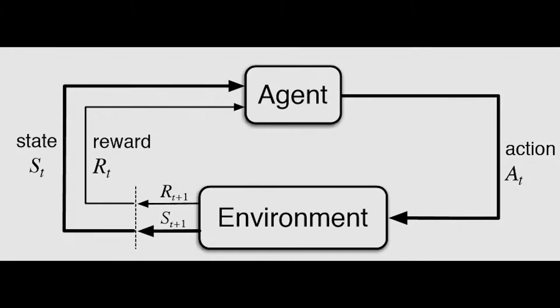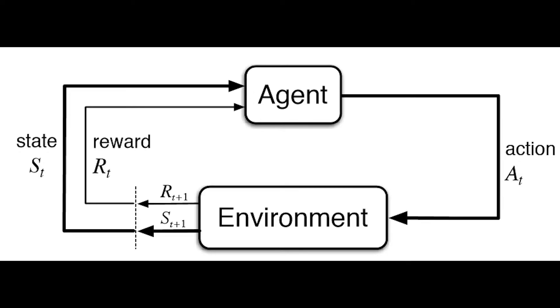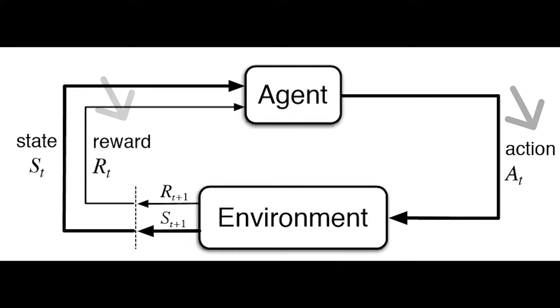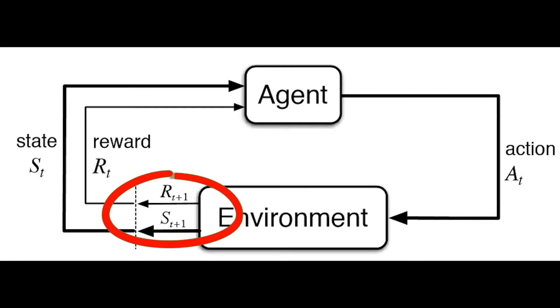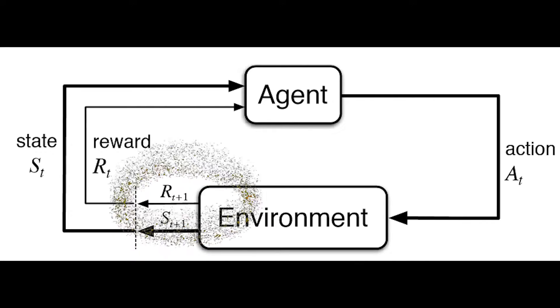In essence, a Markov chain tells us the continuous relationship between an agent and its environment. The agent takes in a state and a reward from the environment, and based on these two variables, the agent chooses the optimal action which gets passed back into the environment. This represents one iteration. Then the environment returns a new state and a new reward to the agent based on the action, and the agent chooses a new action that gets fed back into the environment. This is how the continuous loop repeats itself.